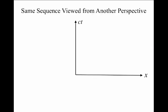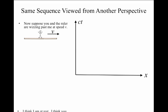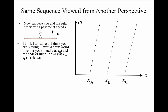But let's look at the situation from another perspective. Let's suppose it's you and the ruler whizzing past me in the lab. I see all of you, the ruler and yourself, passing by with velocity V. I think I'm at rest, and I think you're moving. As a result, I would draw world lines for you at location B and the tips of the ruler at locations A and C like this. They would be sloped because all of you are moving at the same speed through the lab.